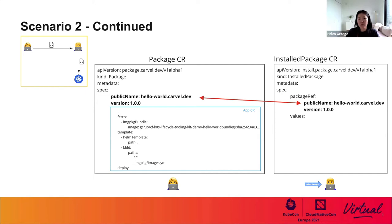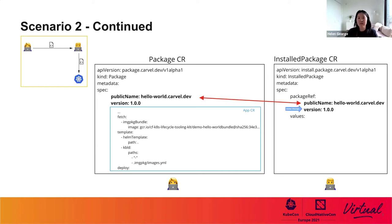The software consumer doesn't need to worry about how to fetch what from where, and doesn't need to have deep knowledge of what they are installing. All you need to do is create an InstalledPackage CR, which references the package you'd like to install by specifying the public key. The rest — actual fetching, templating, and installing — will be taken care of by KApp Controller based on the spec defined by the producer in the Package CR. The consumer can further customize this by specifying a version or providing data values for more granular configuration.